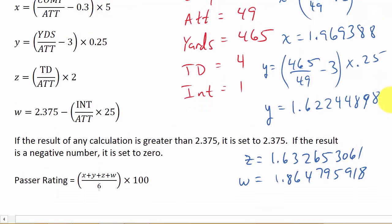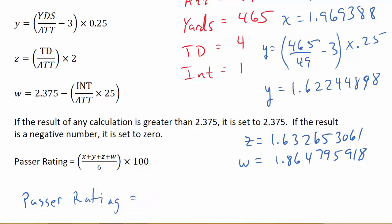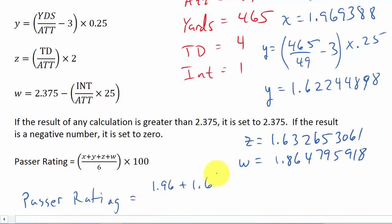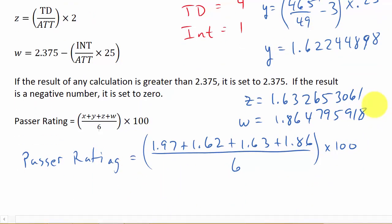Now for the passer rating, that's X plus Y plus Z plus W. Rounding to two decimal places: approximately 1.97 plus 1.62 plus 1.63 plus 1.86, all over 6, and then multiply that times 100.